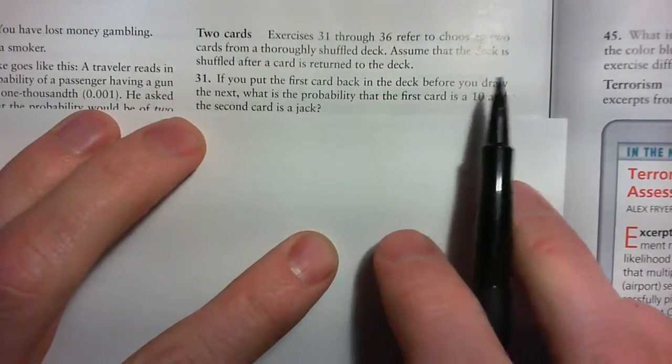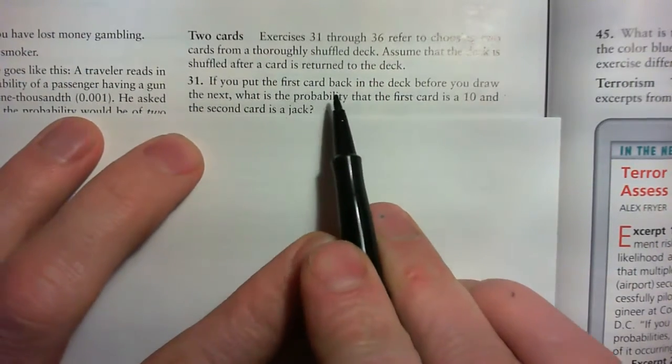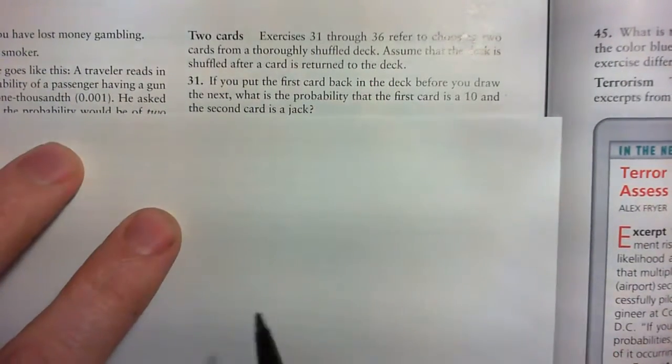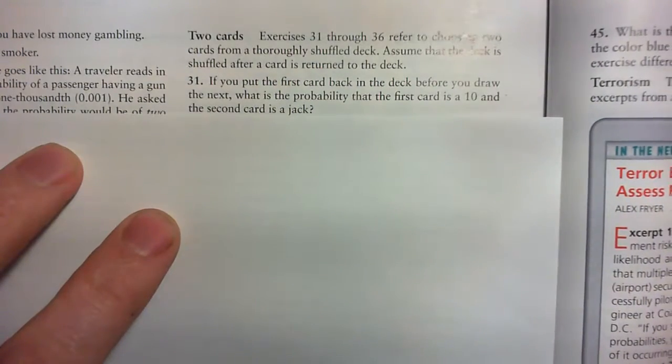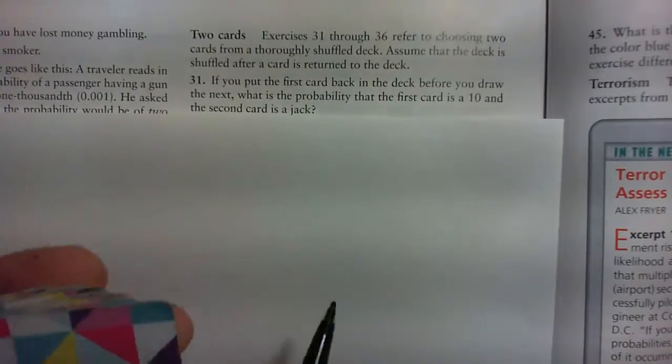So we're going to choose two cards. And here's the key: if you put the first card back in the deck before you draw the next, that's the key there. So drawing one card, what's the probability that the first card is a 10 and the second is a jack?